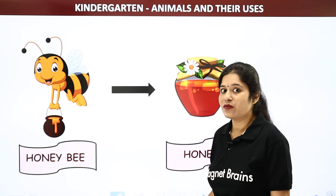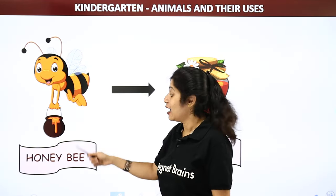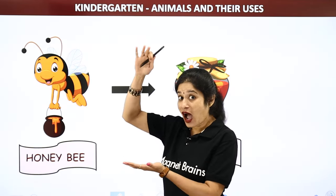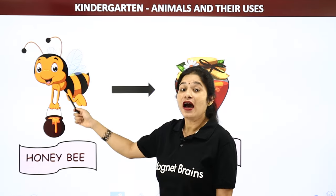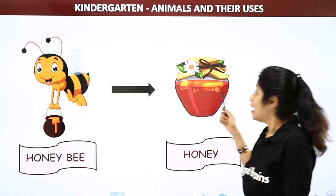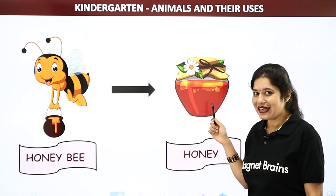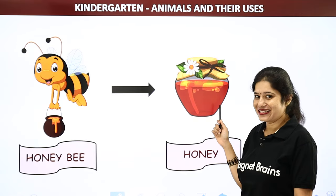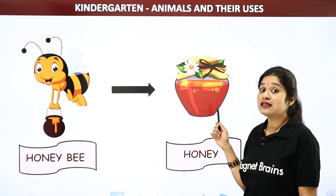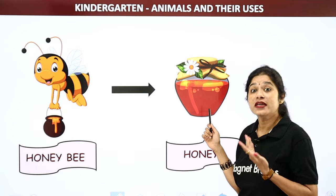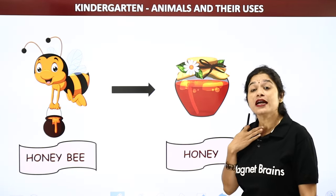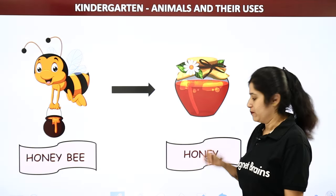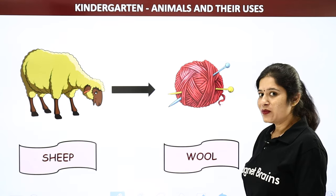The first animal we are learning about is an insect — it's a honeybee. Honeybees live in beehives. Honeybee gives us honey — yummy and sweet! All children love to eat honey, isn't it? Honey has so many medicinal properties also. It is good for our throat. So honeybee gives us honey.